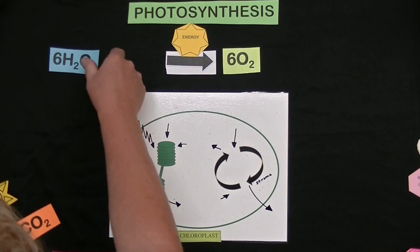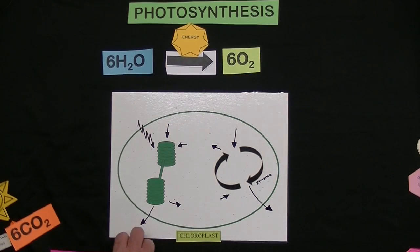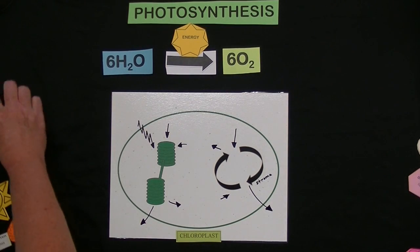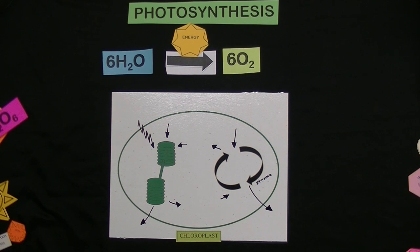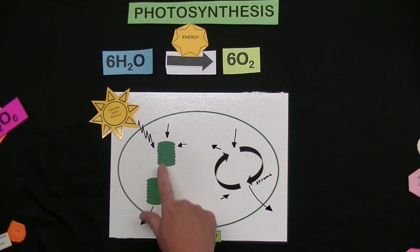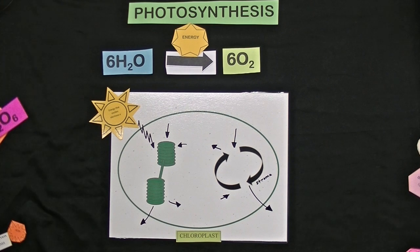When light strikes the plant leaf, the electrons inside the thylakoids get excited. So sunlight strikes the thylakoids and the electrons get excited.